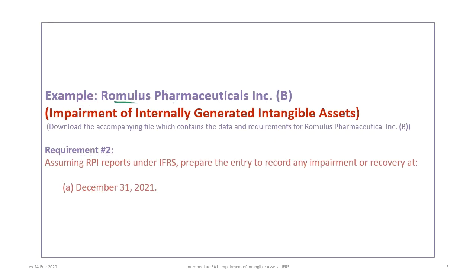As with tutorial 23B, this tutorial is based on the Romulus Pharmaceuticals Inc. B example, so please make sure you have reviewed that. This tutorial will illustrate impairment of internally generated intangible assets, because that's the way the question was designed. However, this approach is applicable to both internally generated and other purchased intangible assets or definite life intangible assets.